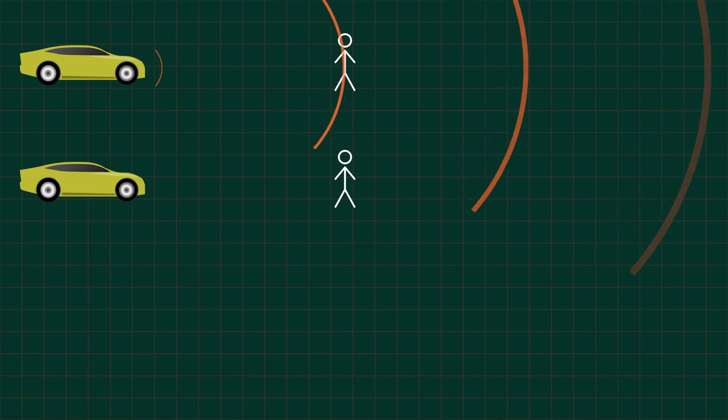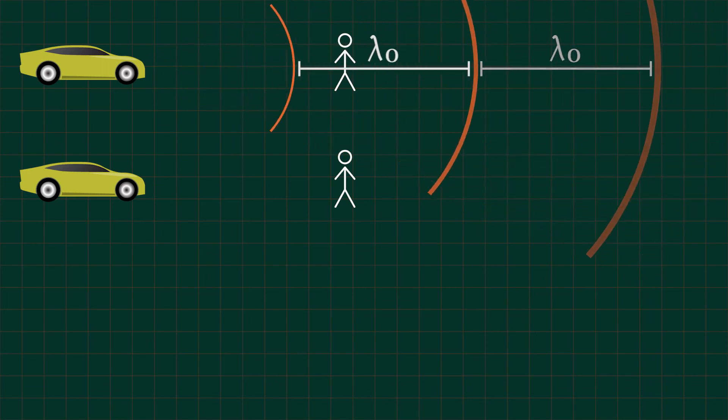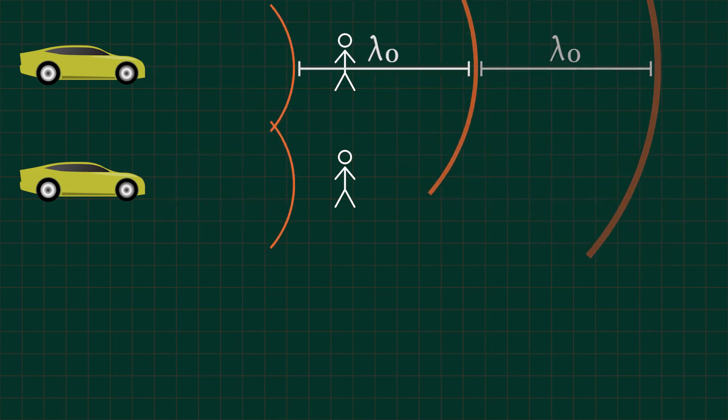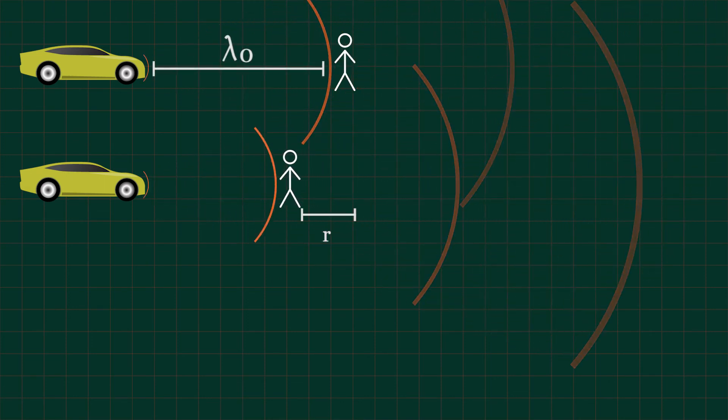This part is gonna be tricky. Let's suppose the car does not move, but the observer moves towards the car at speed v0. First we shall see the signal received by an observer before any motion. The distance between the signal is always lambda 0. But when traveling at speed v0, the observer receives the next signal at a distance r where he receives the previous signal.